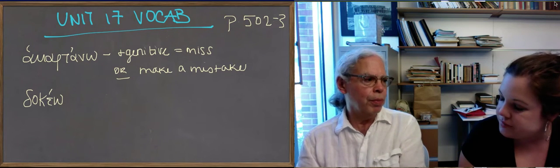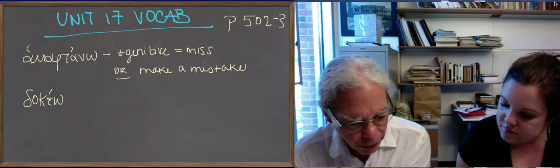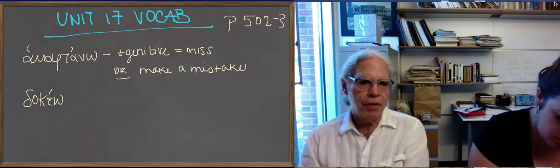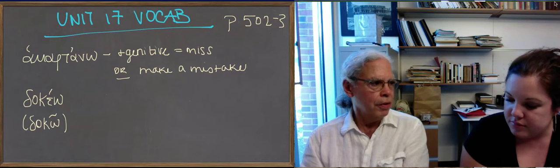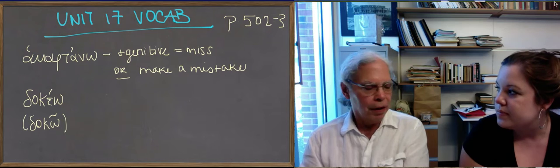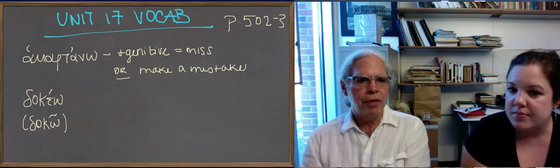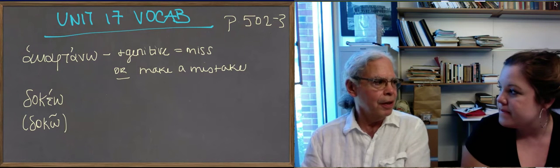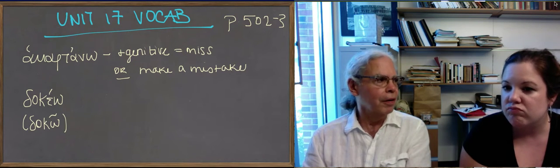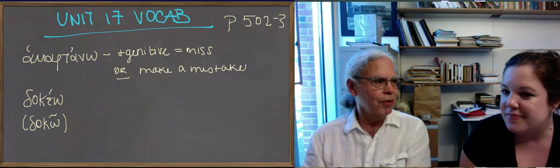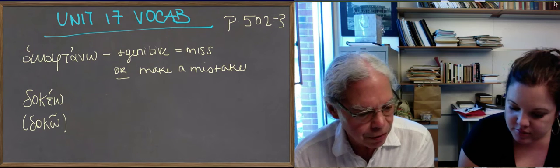And most often this verb is impersonal, but it can also be used personally. The book gives you an example of this verb in the sentence where you can see that these two meanings, seem and think, are possible. And you have to distinguish in any given context which it is. I like to say, it seems good to do this. That's the way, for example, decrees of the Athenian democracy began. Edoxa, though they might seem best to the democracy, to the people rather, to do this, that, and the other thing. A kind of modest way of making, of reporting a decision. So this is a very common word in Greek, and you have to get the hang of these two meanings that it has.